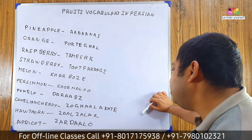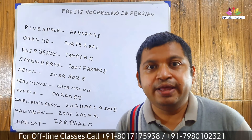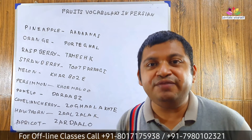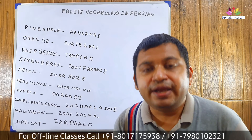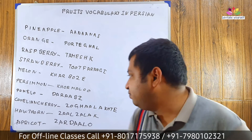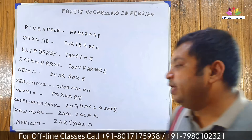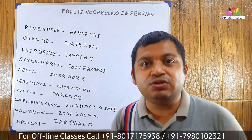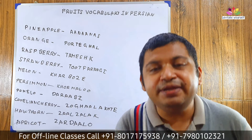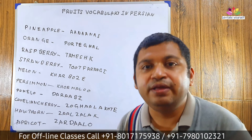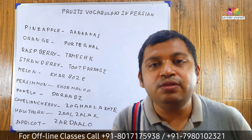Hawthorn: Zaalzalak. Hawthorn: Zaalzalak. Let's pronounce it with me: Zaalzalak. Come to the next word. Apricot: Zardaalu. Let's pronounce it with me: Zardaalu.